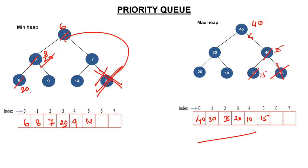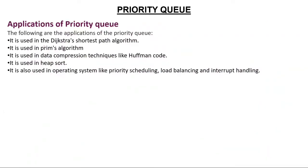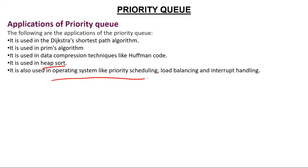Applications of Priority Queue include: Dijkstra's algorithm — used to find single-source shortest path in graph theory; Prim's algorithm — used to find minimum spanning tree; Huffman coding — used for data compression; Heap Sort — when sorting elements using a heap, we use a priority queue; and in Operating Systems — for priority scheduling, load balancing, and interrupt handling.